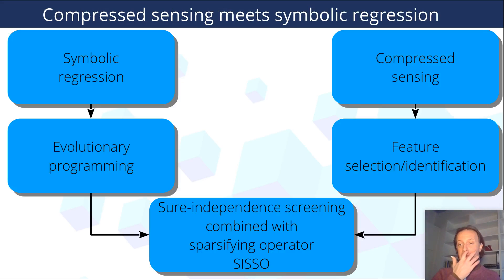And indeed what you will go through in the tutorial is to see how one combines symbolic regression and compressed sensing to give what we call the SISO, the Sure Independence Screening combined with Sparsifying Operator.